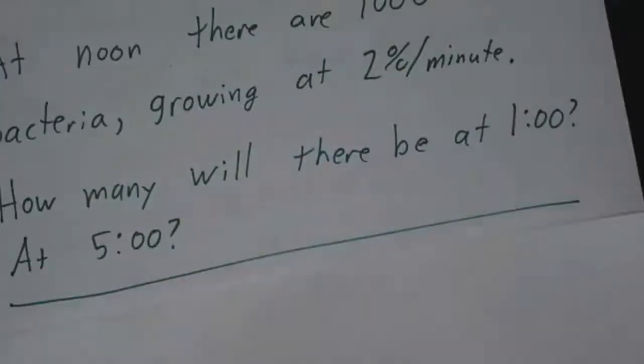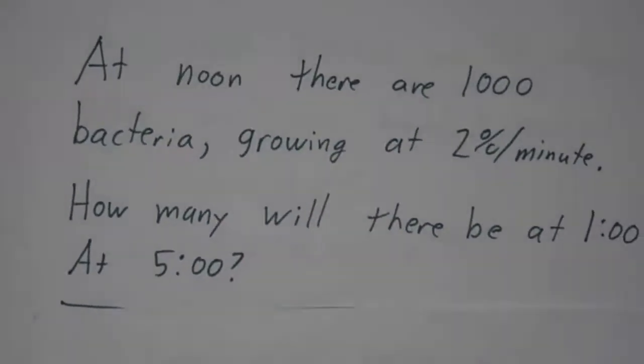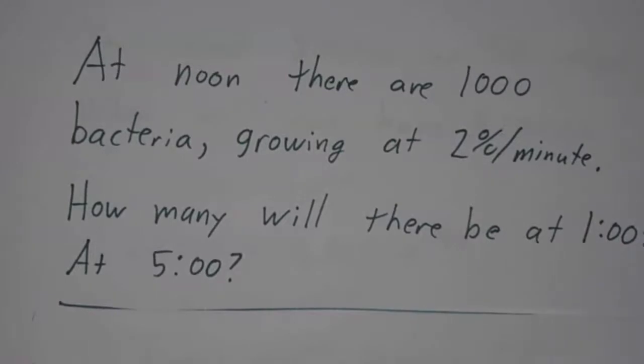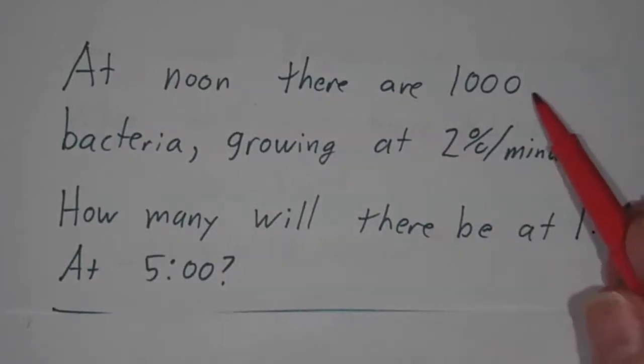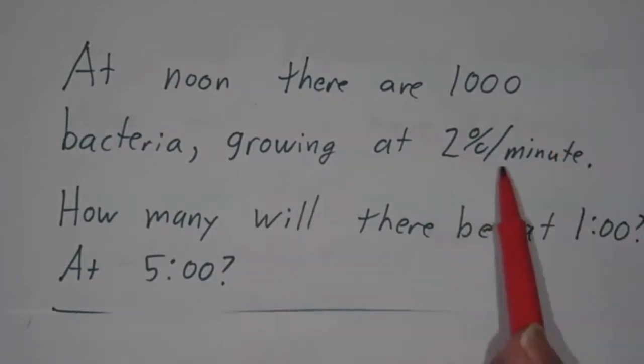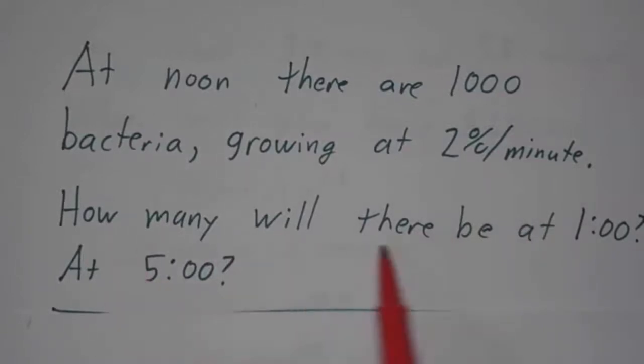A typical problem of the first type is this one. At noon, you have a colony of bacteria growing. Maybe it's growing in a petri dish, maybe it's growing in your lungs. But there are a thousand bacteria, and they're growing at 2% per minute. By the way, bacteria can grow more like 3 or 4% per minute, but we'll assume that there's something slowing them down. So how many will there be an hour later? How many will there be 5 hours later?